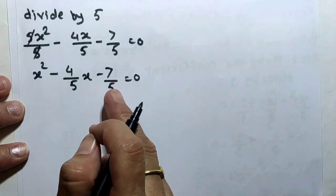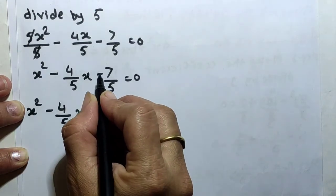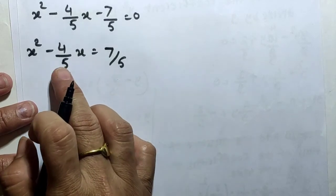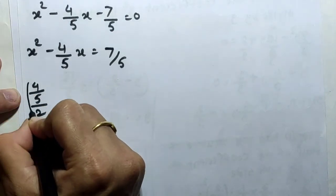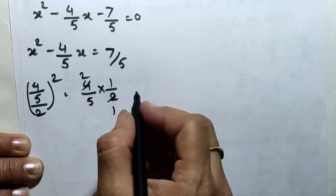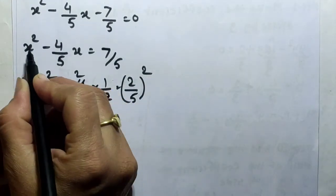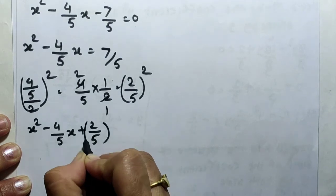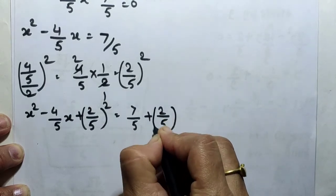In step 2, we shift the constant term to the right-hand side: x² − 4/5·x = 7/5. In step 3, we add the square of half the coefficient of x on both sides. The coefficient of x is 4/5; half of it is 2/5, and its square is (2/5)². Adding to both sides: x² − 4/5·x + (2/5)² = 7/5 + (2/5)².